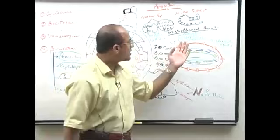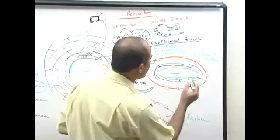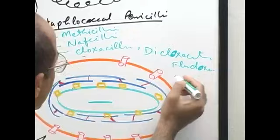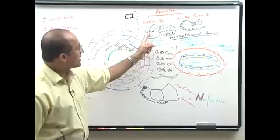Cloxacillin, dicloxacillin, and flucloxacillin have an 'O' in them to remind you they are available in oral form. So now you are clear about natural penicillins and very very narrow spectrum anti-staphylococcal penicillins.